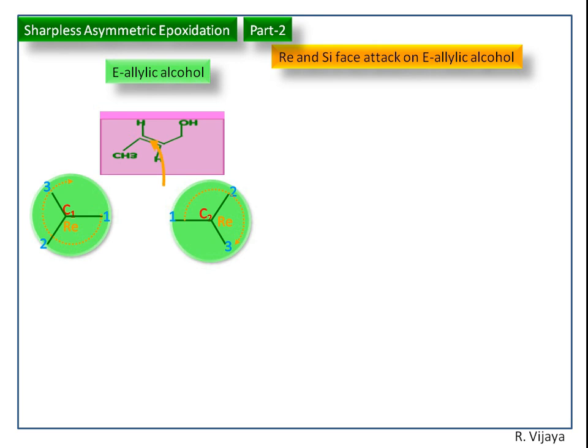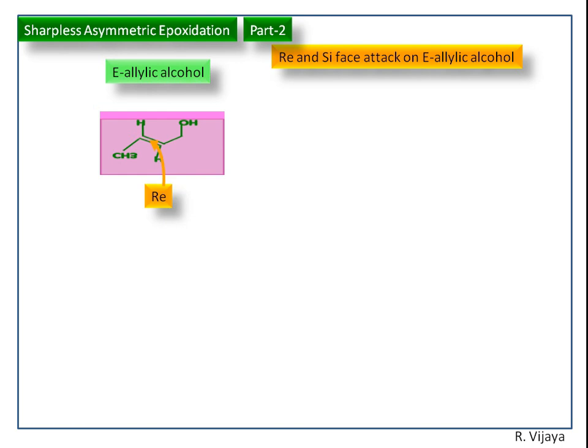Now you have an idea about what is Cy and Ray face attack on Sharpless epoxidation reaction. Next we see the chiral catalyst, that is diethyl tartrate.